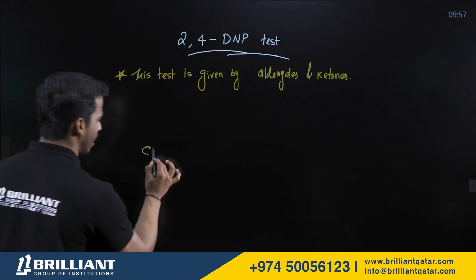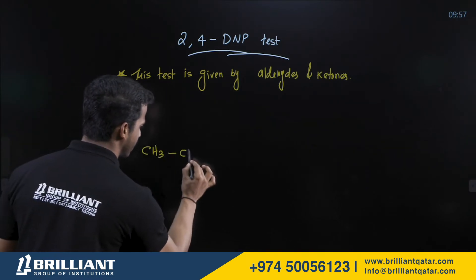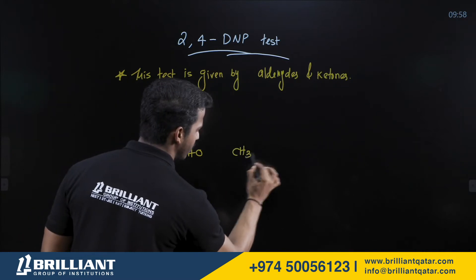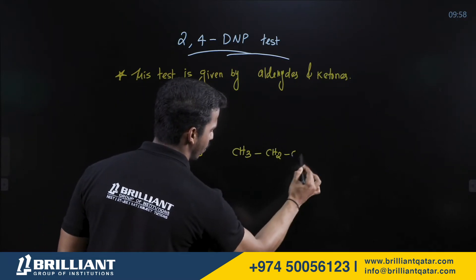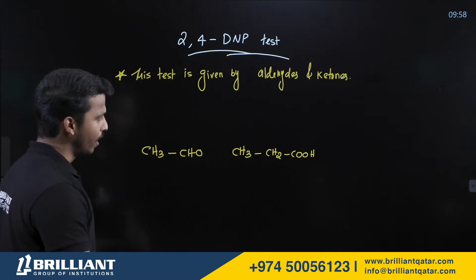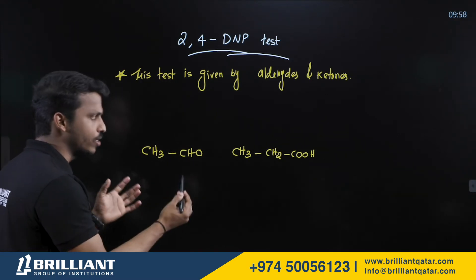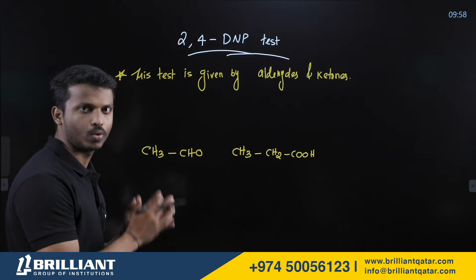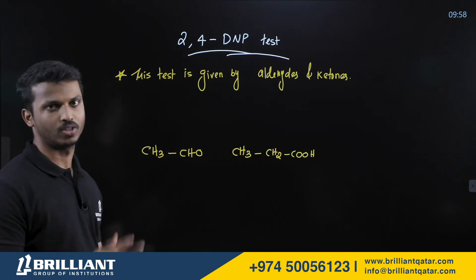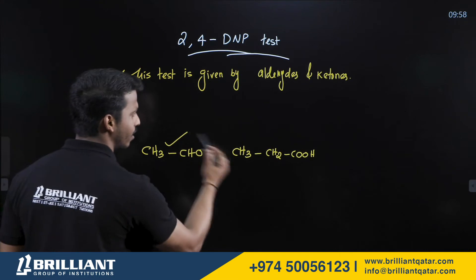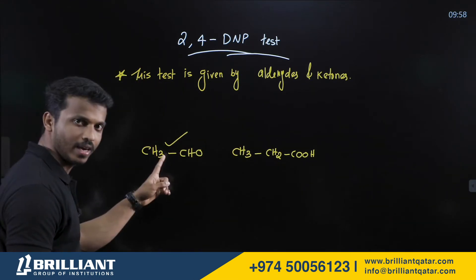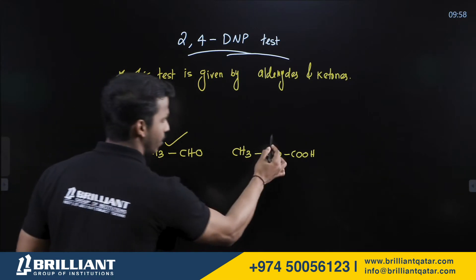Ethanol means CH₃CHO — it's an aldehyde. Propanoic acid means CH₃CH₂COOH. To distinguish these two compounds through a chemical test, we can use the 2,4-DNP test, because ethanol is an aldehyde and propanoic acid is an acid. This test is given by only aldehydes, so the aldehyde can give this test but the acid cannot.